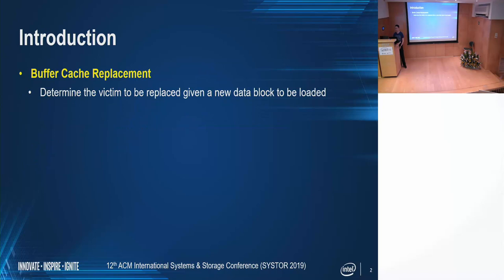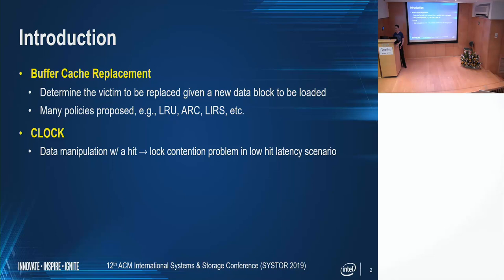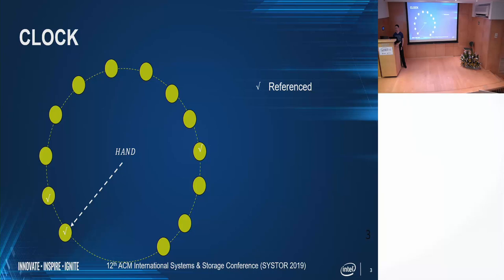Buffer cache replacement determines the victim to be replaced given a new data block to be loaded. Many policies have been proposed. Those policies manipulate the data structure when there is a cache hit, which introduces a lock-contention problem when low hit latency is required — for example, in the problem of page replacement with virtual memory management. To resolve the lock-contention problem, CLOCK is a coarse-grained LRU set without the exact access order.